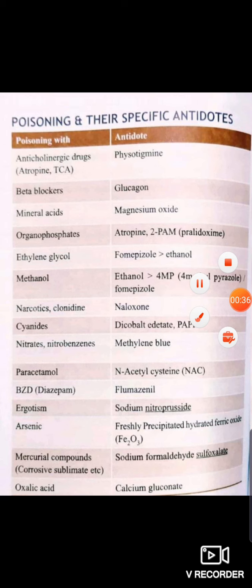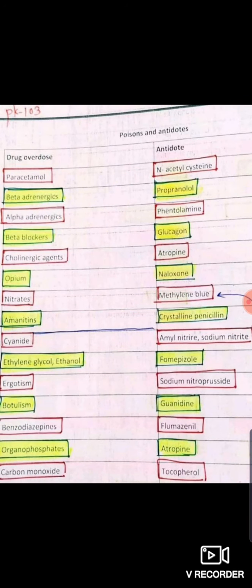You can note it very well. The beta blocker antidote is glucagon. Methanol antidote — for ergotism, sodium nitroprusside. Arsenic: freshly precipitated ferric oxide. Oxalic acid: calcium gluconate. Paracetamol: acetylcysteine. Nitrates: methylene blue. Ergotism: sodium nitroprusside. Botulism: guanidine. These are very important notes for MBBS students, pharmacy students.